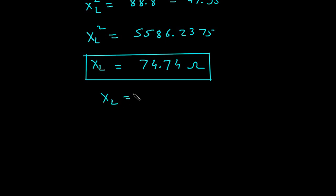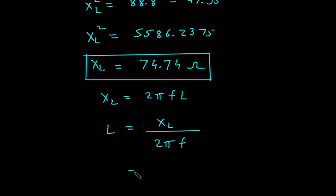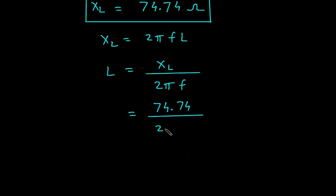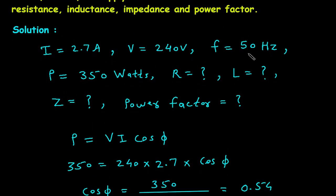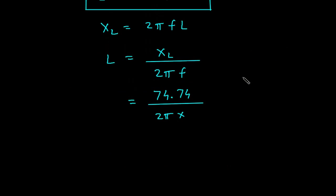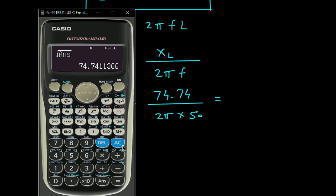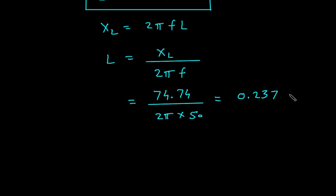Now, we know that Xl = 2πfL. Therefore, L = Xl / (2πf) = 74.74 / (2 × π × 50) = 0.237 Henry. Therefore, L = 0.237 H. This is the value of inductance.